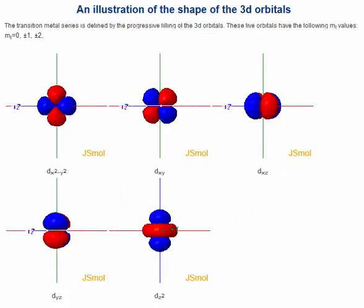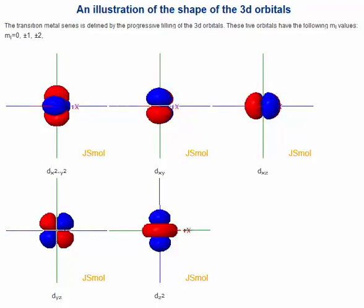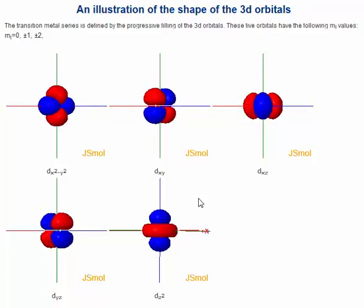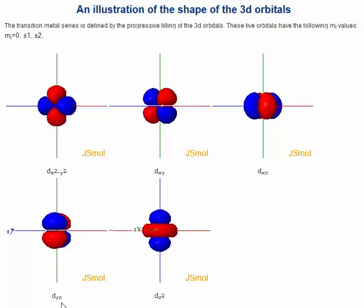To understand the difference between these two cases, we have to go back and look a little bit at the d orbitals. And if you remember that, at least in the terms of the 3d orbitals, there's five of them: dx², y², dxy, dxz, dyz, and dz², and this is their relative shape.